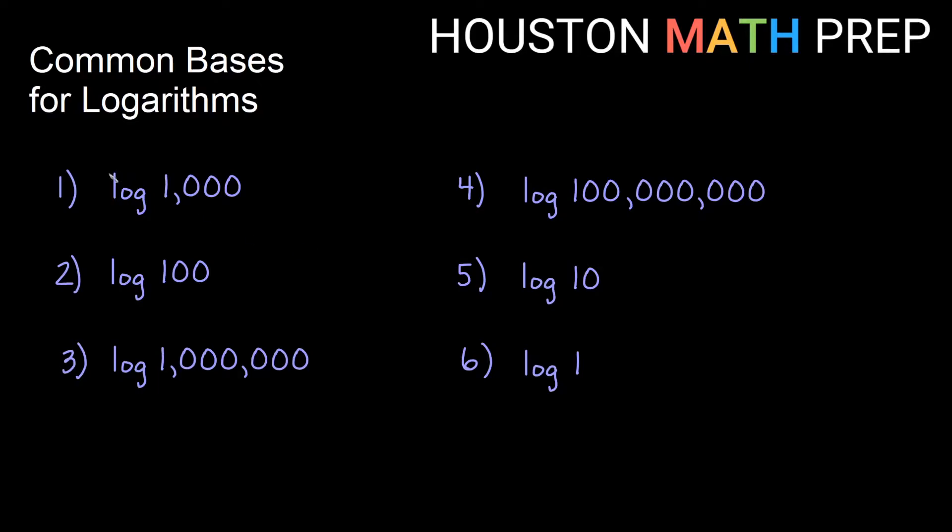Just looking through some of these, log of 1,000, we can assume that there's a base of 10 here since no base is written. 10 to what power gives us 1,000? Well, we just simply count the zeros and we would say that this is 10 to the third.